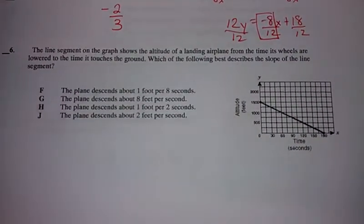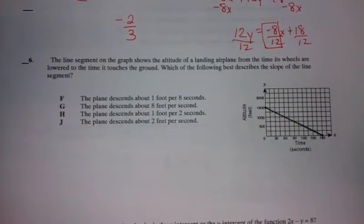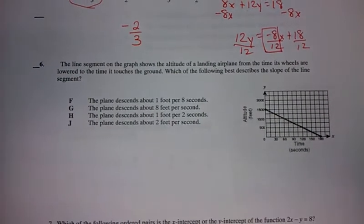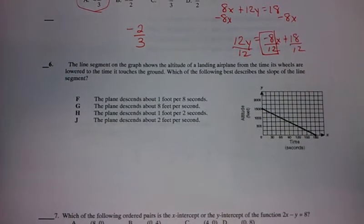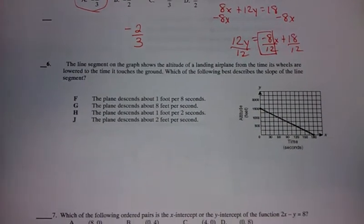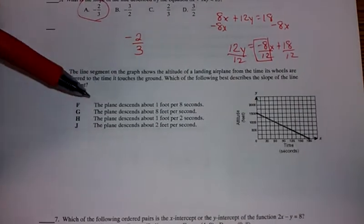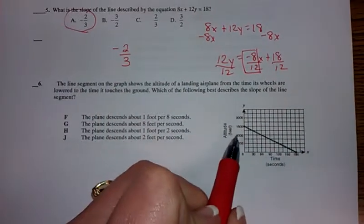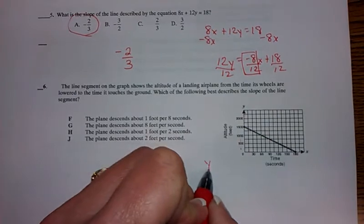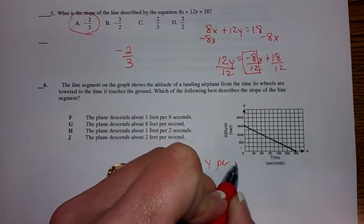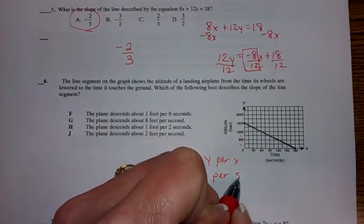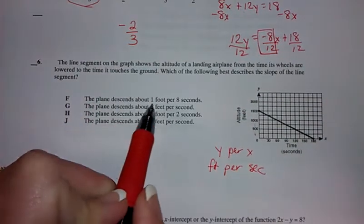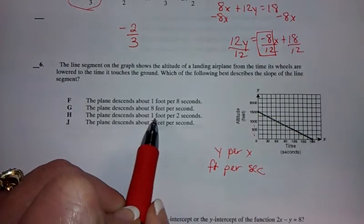The next one says the line segment of the graph shows the altitude of a landing plane from the time in which the wheels are lowered to the time it touches the ground. Which of the following best describes the slope of the line? So when we're trying to find the slope we're going down so many feet. It's feet. It's y per x. So it's feet per second. Foot per second, feet per second. Okay, so that's all fine. So let's go and look.